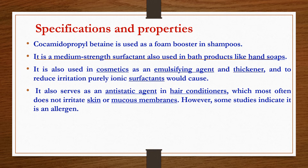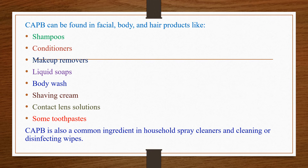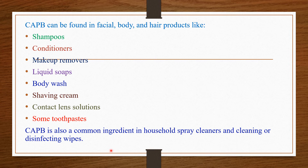CAPB can be found in facial, body, and hair products including shampoos, conditioners, makeup removers, liquid soaps, body washes, shaving cream, contact lens solutions, and some toothpastes. CAPB is also a common ingredient in household spray cleaners and disinfecting wipes. The same ingredient used on our skin and teeth is also used for household cleaning and disinfecting purposes.